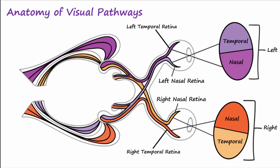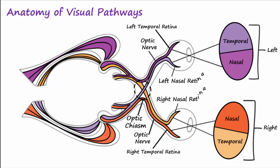From the retina, visual information is transmitted by way of ganglion cells that come together to form the optic nerves, which then extend to the optic chiasm, where some of the nerve fibers cross over to the opposite side of the brain. Notice that it is visual information coming from the nasal retina of both eyes that crosses over at the optic chiasm.